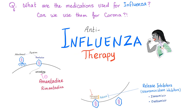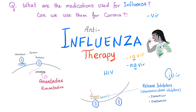What are the medications used for influenza, and can we use them for coronavirus? Medications for influenza include uncoating inhibitors, fusion inhibitors — which inhibit attachment and penetration, also called entry inhibitors — and release inhibitors such as the famous zanamivir and oseltamivir. Here is a pharmacology tip: when a drug ends in '-vir,' it's usually antiviral. When it ends in '-navir' (N-A-V-I-R), it's an anti-HIV drug. If the drug ends in '-evir' with an 'i,' it's anti-influenza — 'i' for influenza.